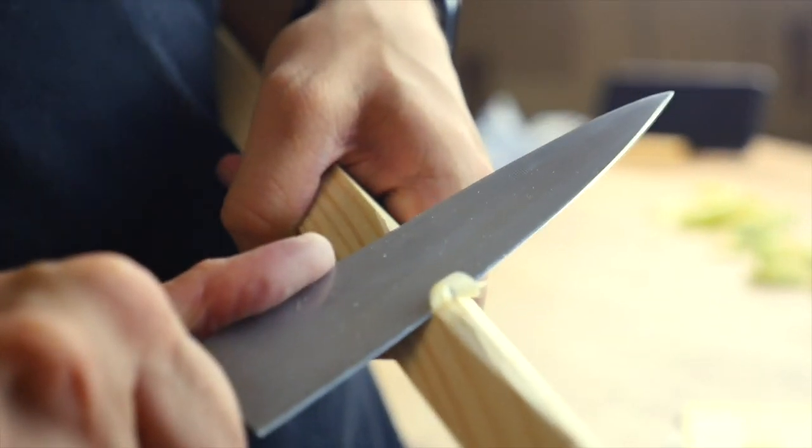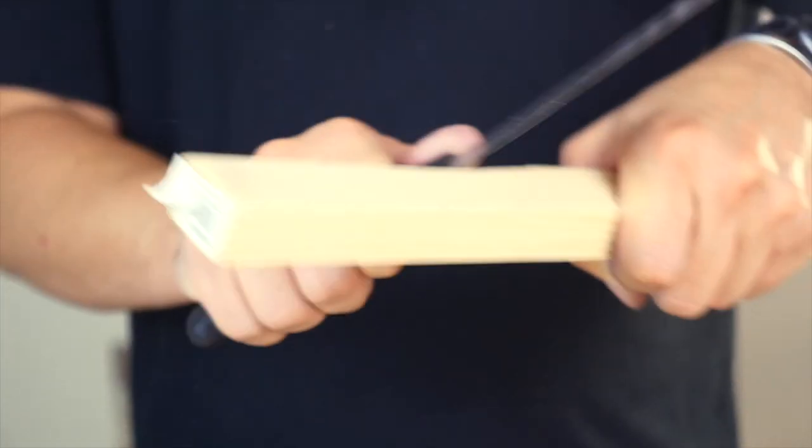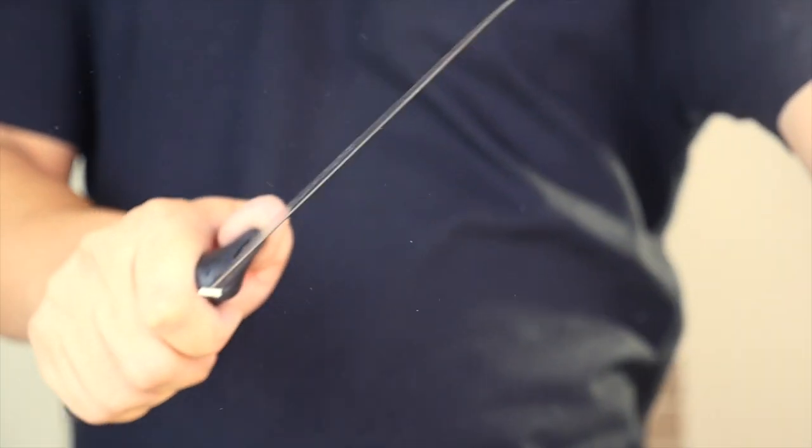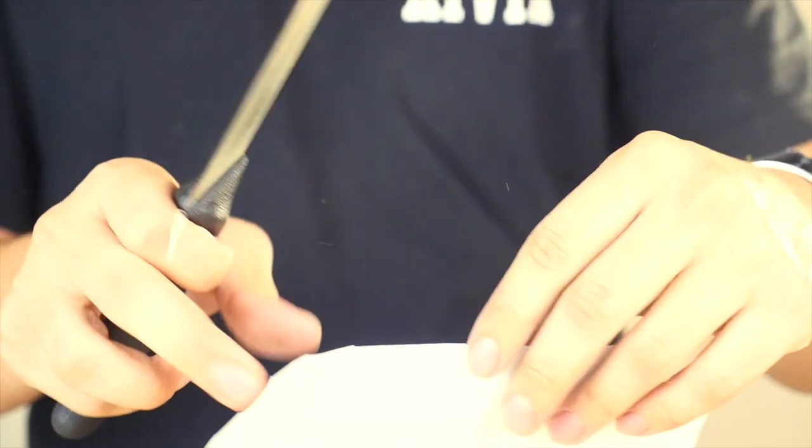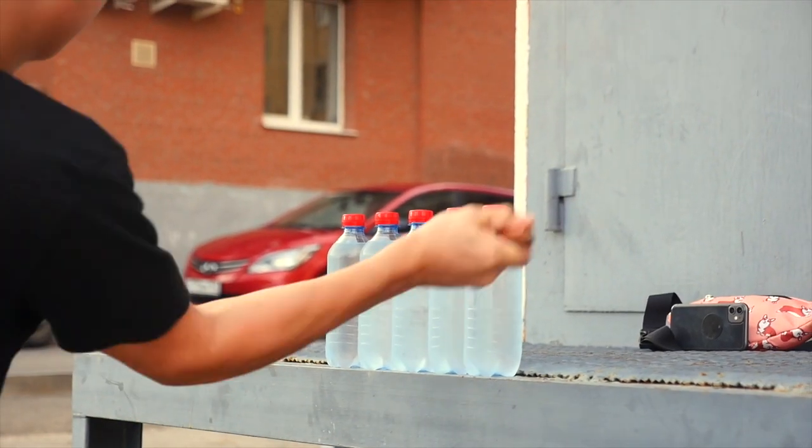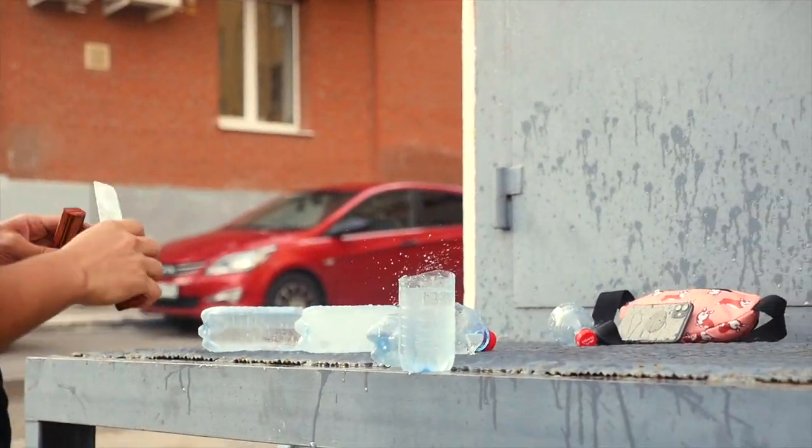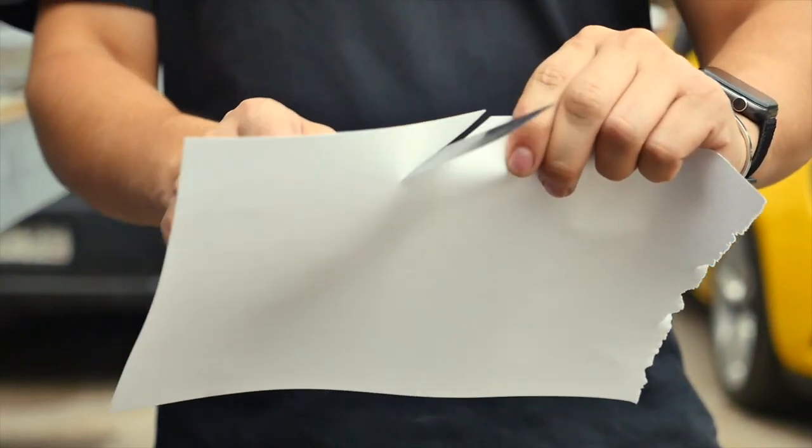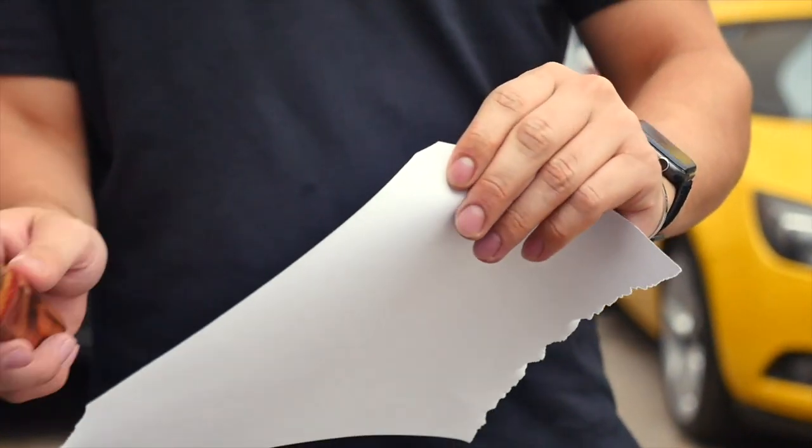And the last, hardest test. We chop a piece of wood. And immediately after, we cut the paper. Still sharp. But we achieved all this with a sharpening of 1000 grit. What will be the knife if you sharpen it for 10,000 grit? Subscribe to find out.